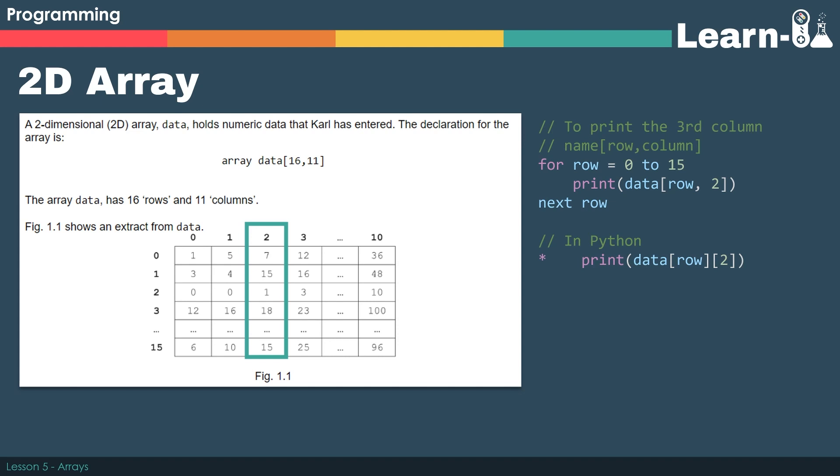In our example I've highlighted column 2, the third column along. If we wanted to print that data out, we could use a for loop like in the example. So for row equals 0 to 15, print data[row,2]. So we'd loop through 0 to 15 and then print column 2.